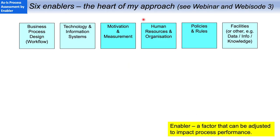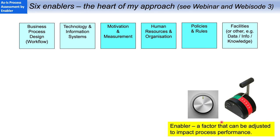Earlier in the webinar back in April, in webisode 3, I showed that the concept of the enablers was at the heart of my approach, because I want to use this framework to build a holistic understanding of why the process behaves the way it does. An enabler is a factor that can be adjusted to impact the performance of the process, either for better or for worse. That's why I call these the dials and levers of process change.